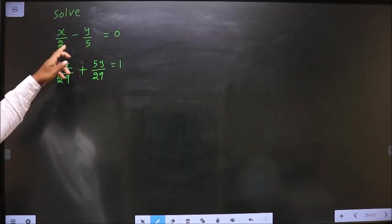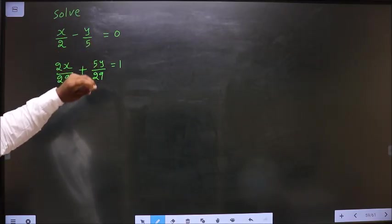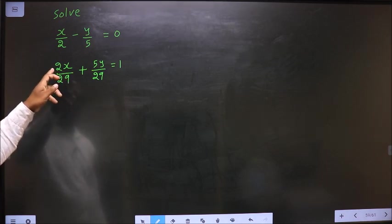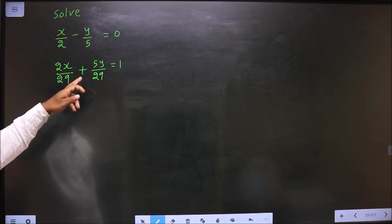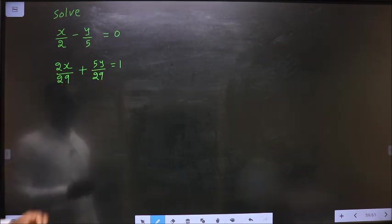Solve x by 2 minus y by 5 equal to 0 and 2x by 29 plus 5y by 29 equal to 1.